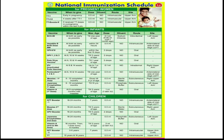Measles vaccine first dose is given at 9 to 12 completed months, up to a maximum age of 5 years. The dose is 0.5 ml, given subcutaneously, at the right upper arm.